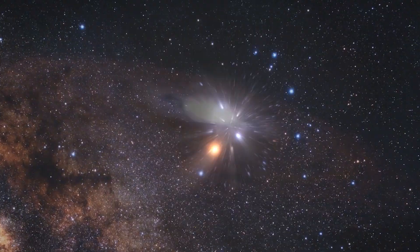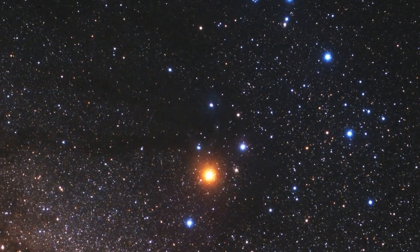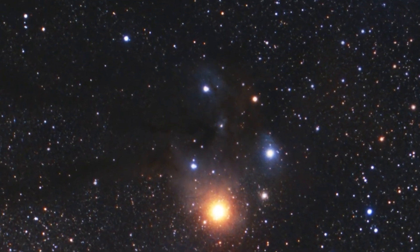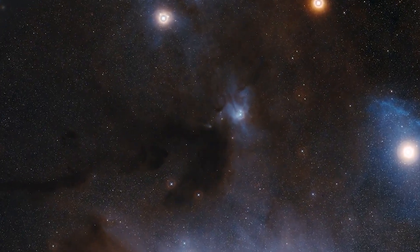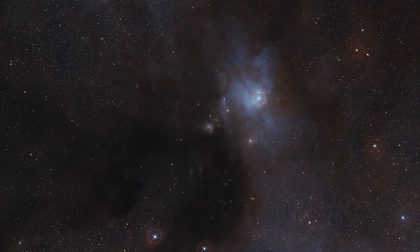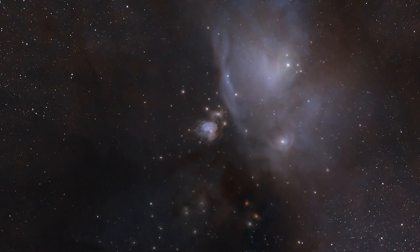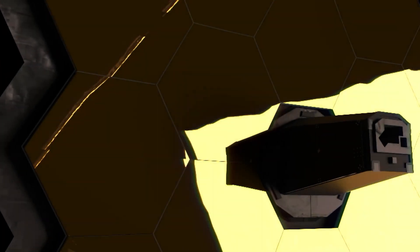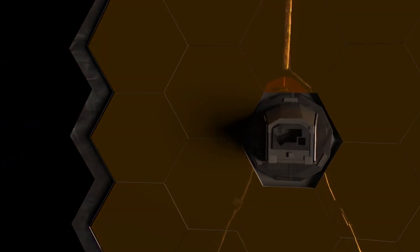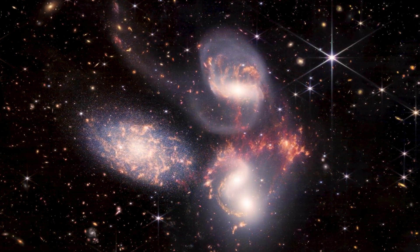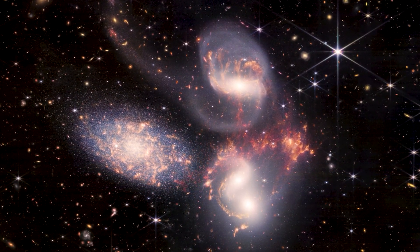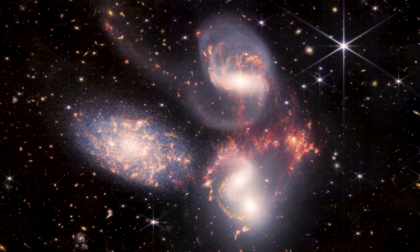Bubbles of ionized gas around these galaxies grew and merged, gradually transforming the universe into its current transparent state. These early galaxies also exhibited surprising features such as active star formation and unexpected structures, challenging our understanding of galactic evolution.